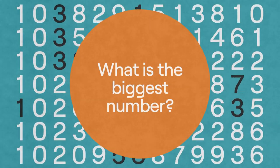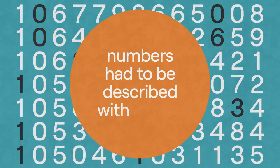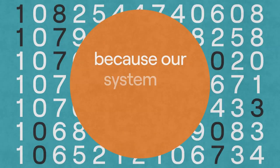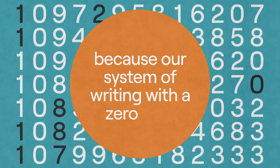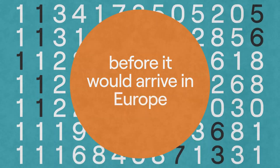What is the biggest number? In the time of Archimedes, numbers had to be described with names because our system of writing with a zero digit was over a thousand years away before it would arrive in Europe.